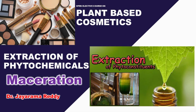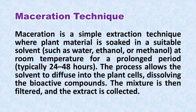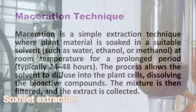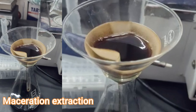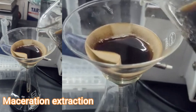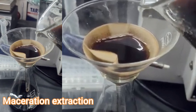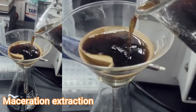Maceration is a simple extraction technique where plant material is soaked in a suitable solvent such as water, ethanol, or methanol at room temperature for a prolonged period. You maintain them at room temperature and soak them in these solvents for nearly 24 to 48 hours. This process allows the solvent to diffuse into the plant cells, dissolving the compounds into the solvent.